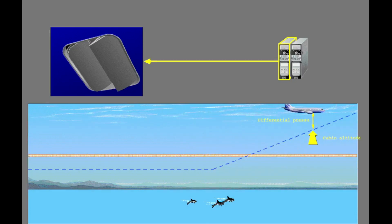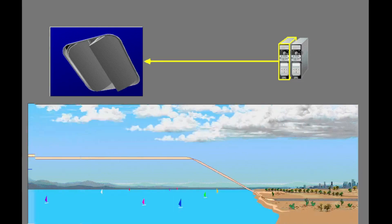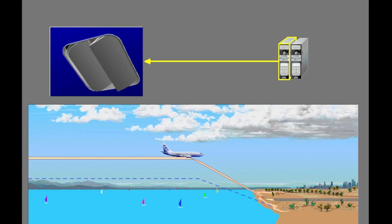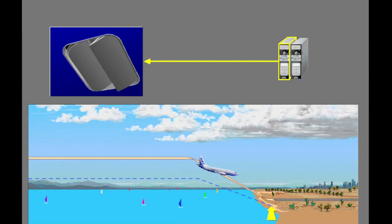But if the differential pressure is at the maximum, the cabin altitude changes to keep the differential pressure at the correct limit. When the airplane descends from cruise altitude, the pressure controller commands a proportional cabin altitude descent to 300 feet below the planned landing elevation. By landing with the airplane pressurized, cabin altitude changes are minimized during approach.